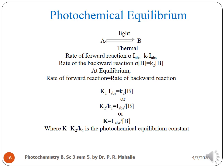Now photochemical equilibrium. Here, A in the presence of light is converted to B, and B by a thermal reaction is converted back to A. At equilibrium, the rate of the forward reaction equals the rate of the backward reaction. The rate constant here is the photochemical equilibrium constant.